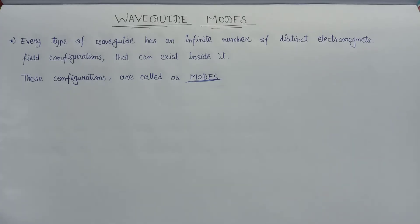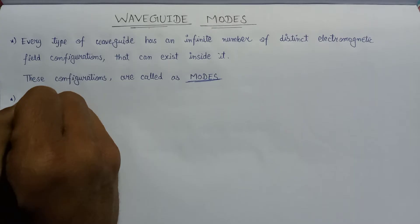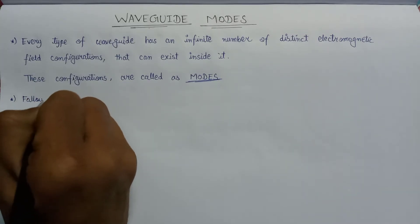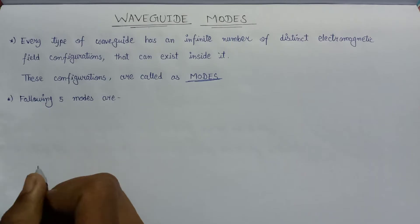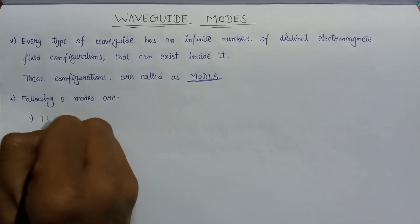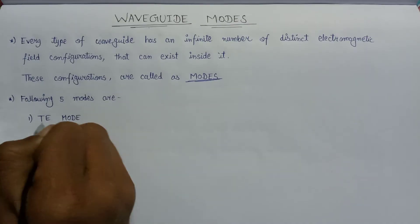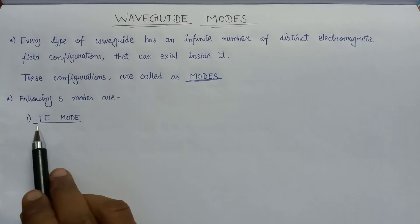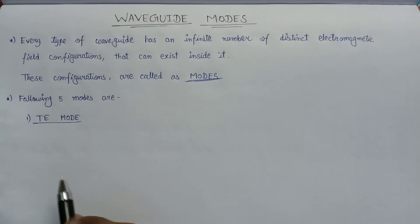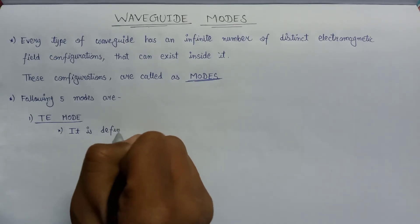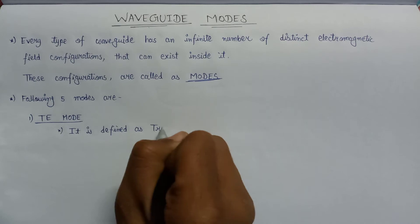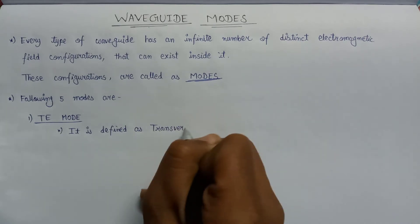Depending upon the different electromagnetic field configurations, these modes vary in different types of waveguides. Let us discuss about the five modes. Mode number one is the TE mode. TE mode represents Transverse Electric mode.